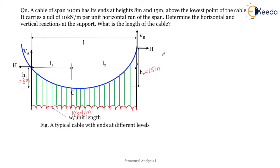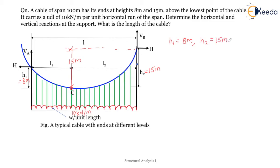We need to determine the horizontal and vertical reactions at the supports and the length of the cable. From the diagram, the height from C to support B is 15 m. So h1 = 8 m, h2 = 15 m, and total span L = 100 m.